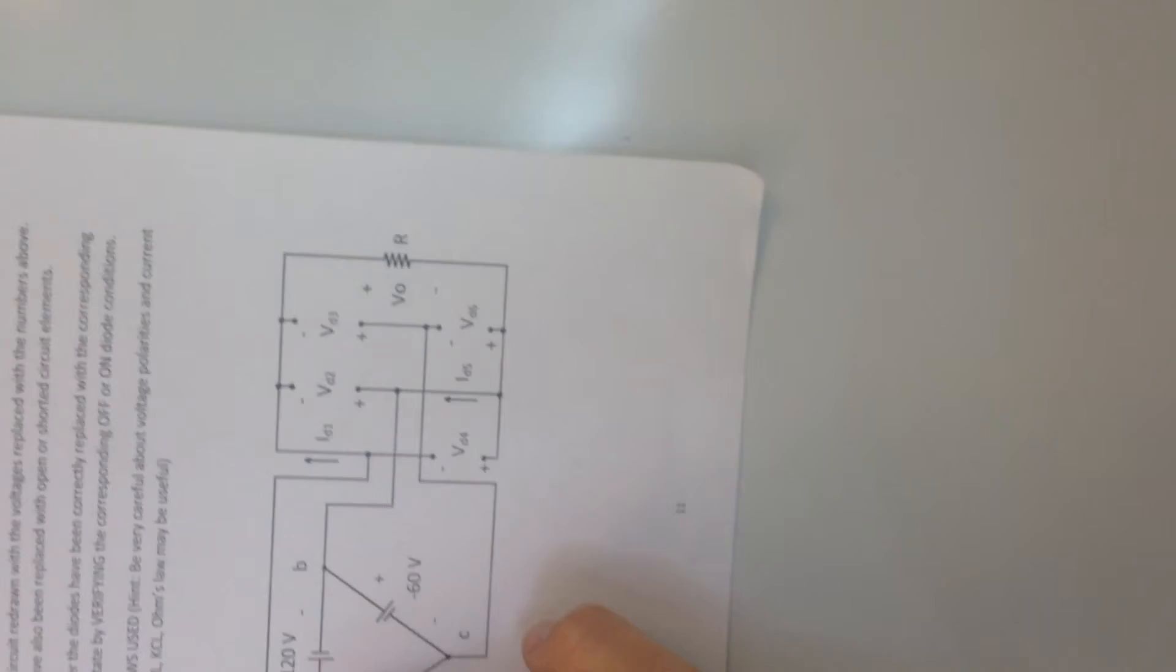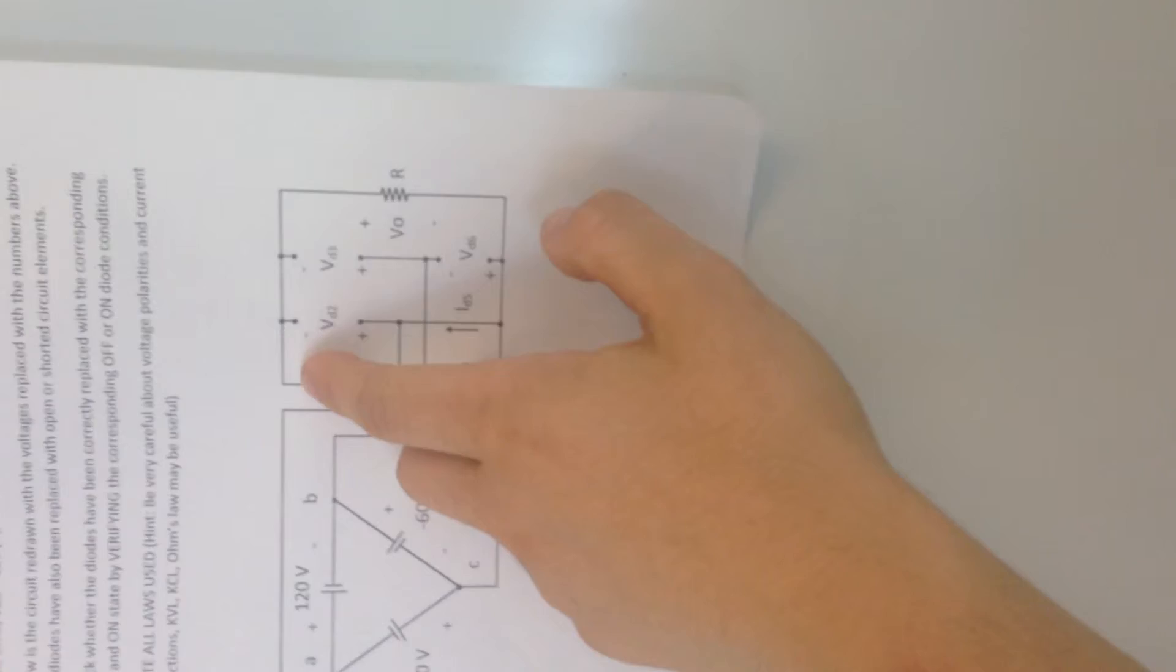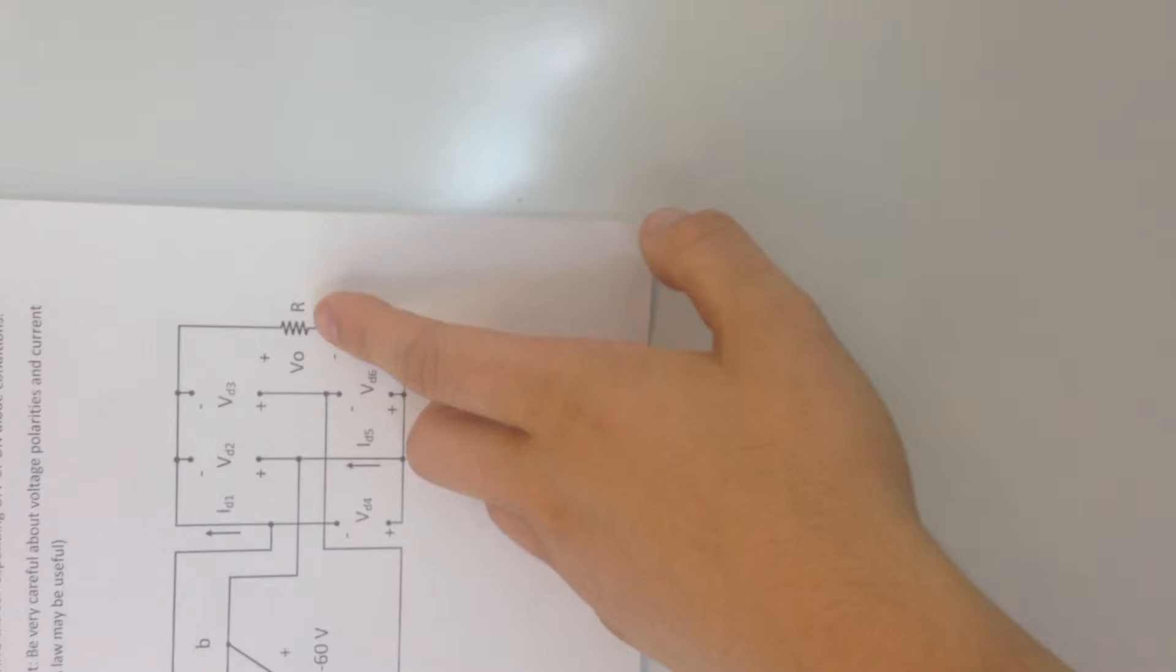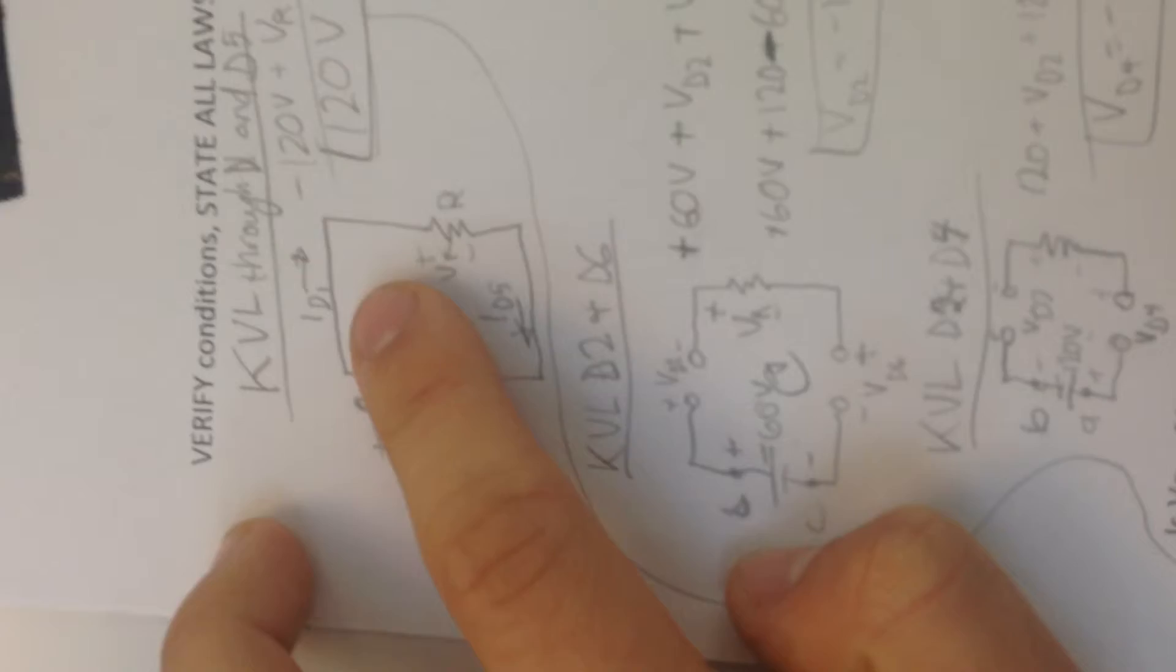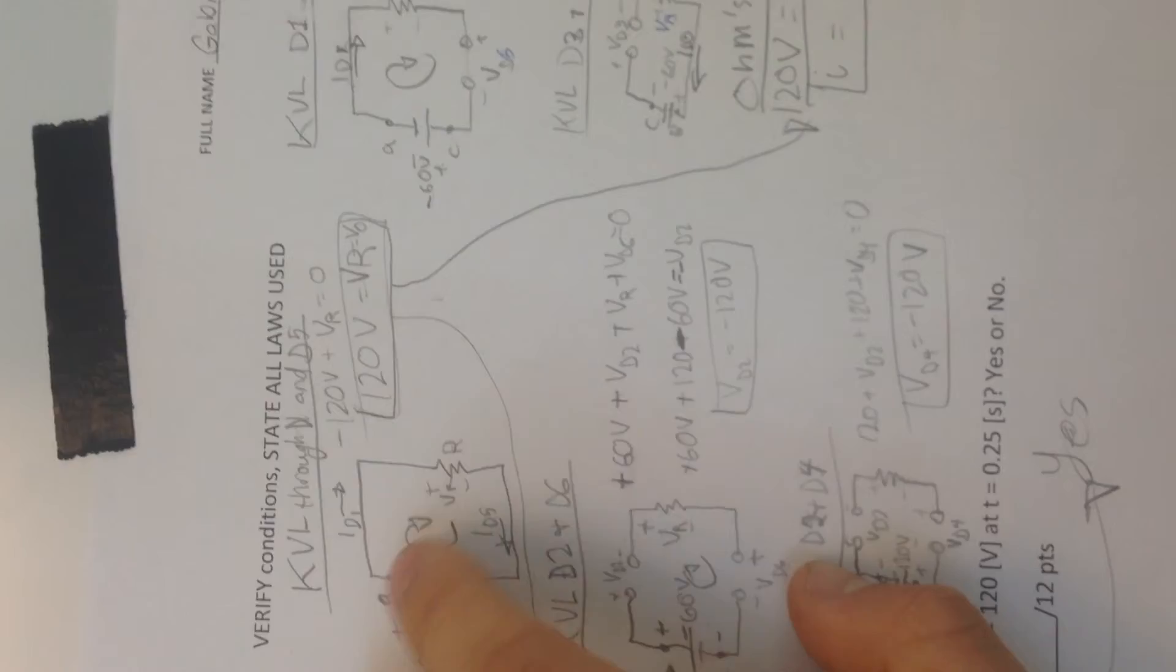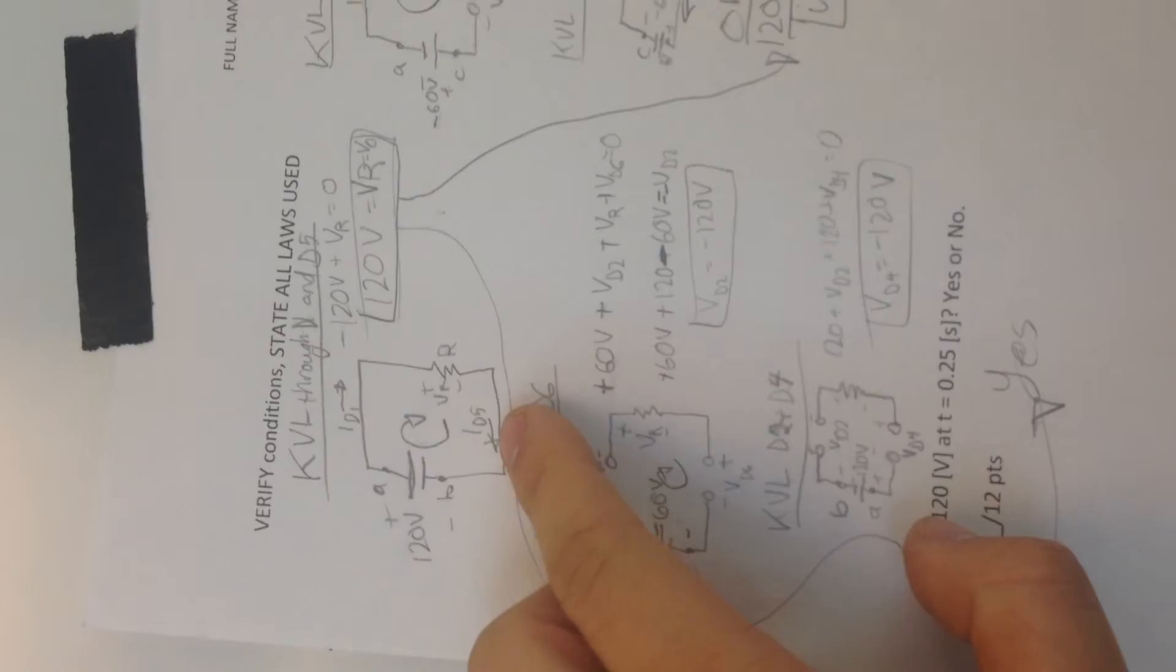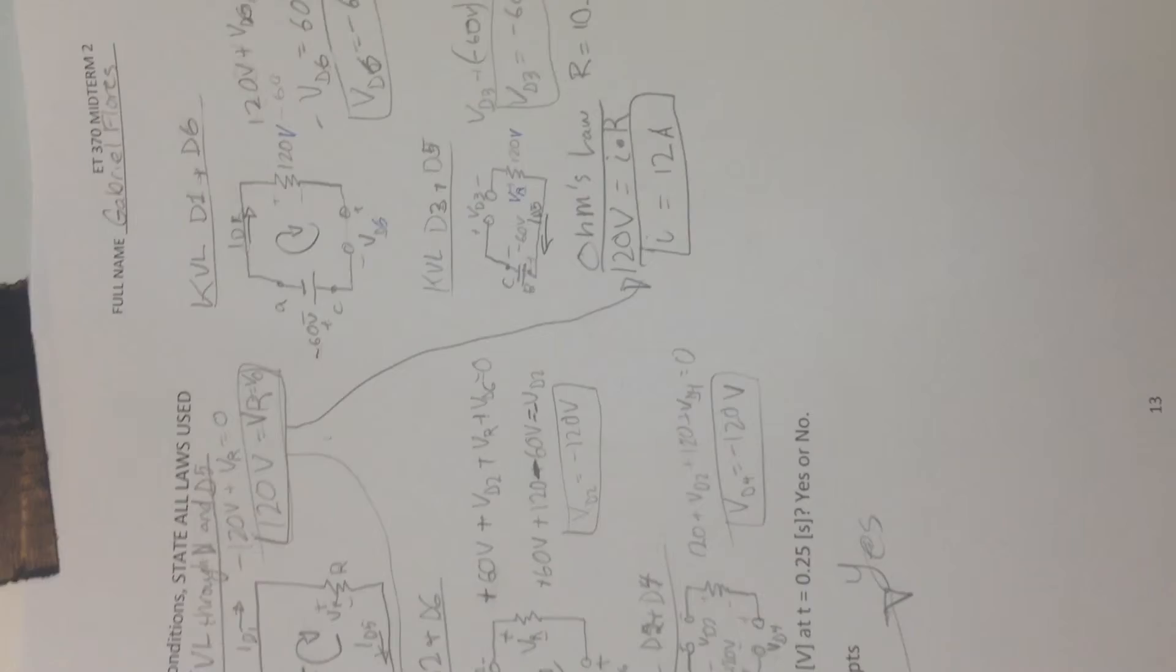So, I have the A node. I'm going to go all the way up through ID1, or the current through diode 1. And I'm going to go across the resistor, which is V0, or VR, as I said in my problem. And I'm going to go through ID5, and then back to B. So, now, if we jump back over here, I go from A to current of D1 across the resistor, which is VR or V0, and then current of diode 5 back to B, negative node, positive node.